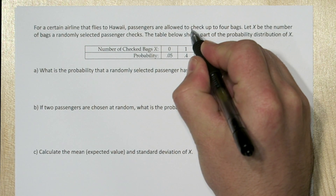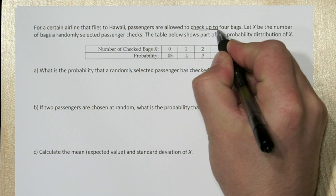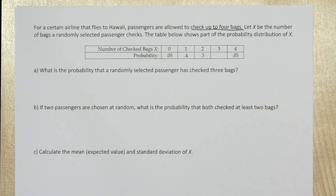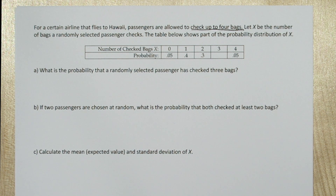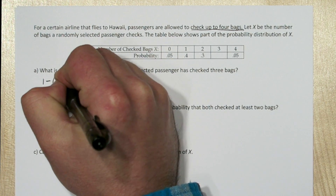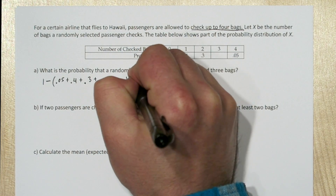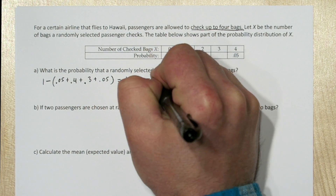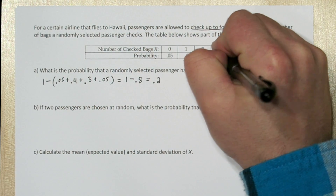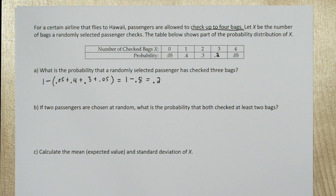In the stem of the problem it says passengers are only allowed to check up to four bags. That means our table represents all the possible number of bags a passenger can check: 0, 1, 2, 3, or 4. So all these probabilities have to add up to 1. To determine what the probability of checking 3 bags is, we can just take 1 and subtract out all the other probabilities. So the probability a passenger checks 3 bags is 0.2.